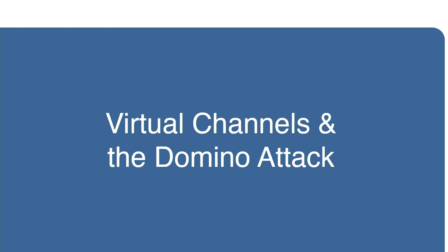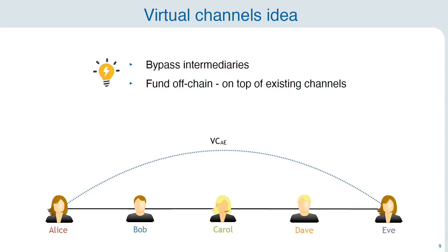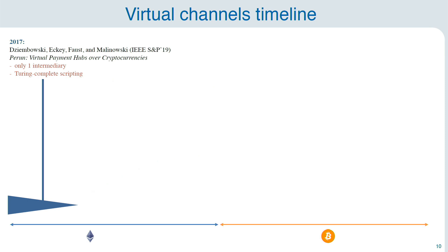This brings us neatly to virtual channels. The main idea is essentially we want to bypass intermediaries and create a direct connection between two users. But the difference to a payment channel is that now we don't fund the channel on-chain; we fund the channel off-chain on top of the existing payment channel infrastructure, as you can see on this picture. It all started in 2017 where Jembowski et al. introduced Perun, which is the first virtual channel construction that works over one intermediary and relies on Turing-complete scripting, so it is compatible with Ethereum-like currencies.